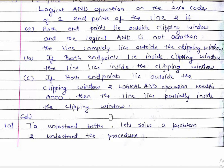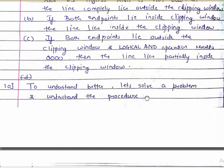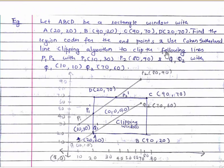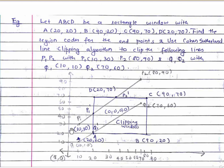To understand better, let's solve an example. Let ABCD be a rectangular clipping window with coordinates: A=(20,20), B=(90,20), C=(90,70), and D=(20,70). We need to find the region codes for the endpoints and use the Cohen-Sutherland algorithm to clip the following lines: P1P2 with P1=(10,30) and P2=(80,90).